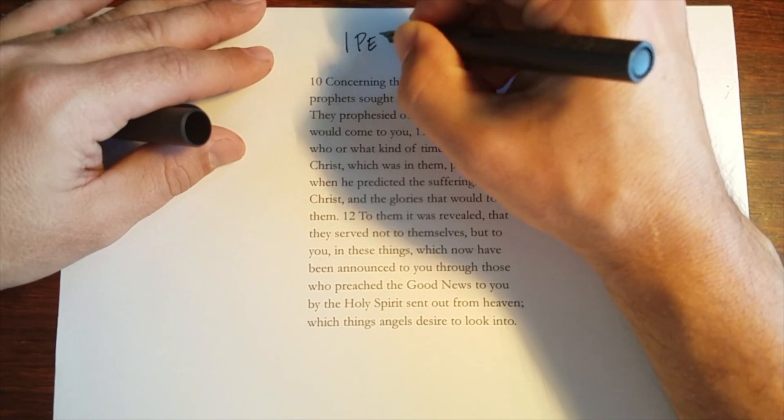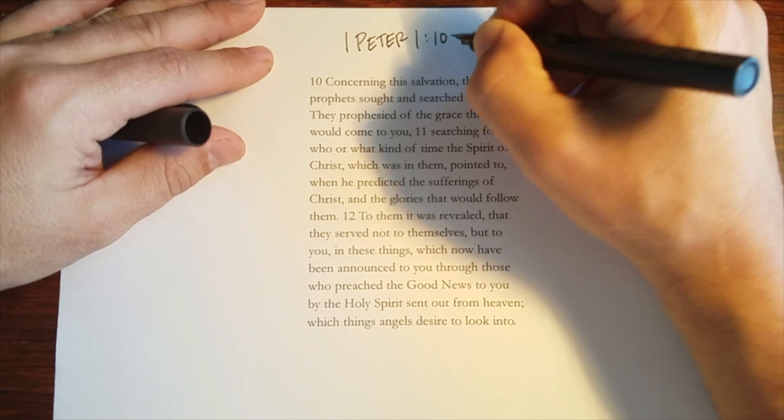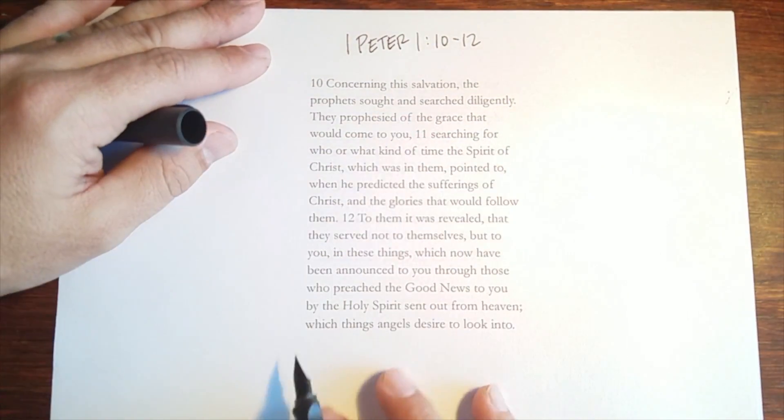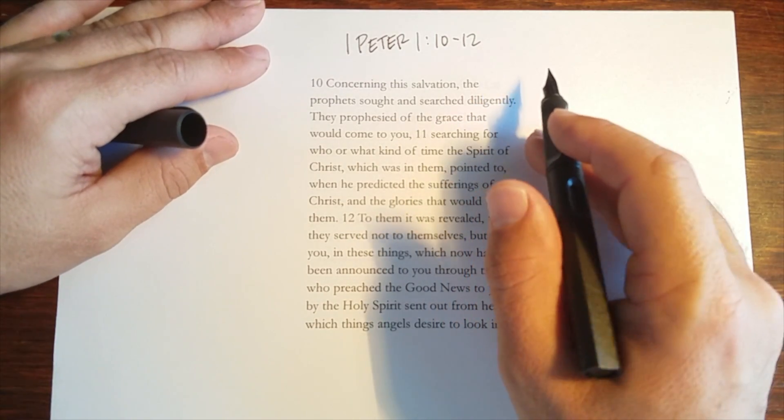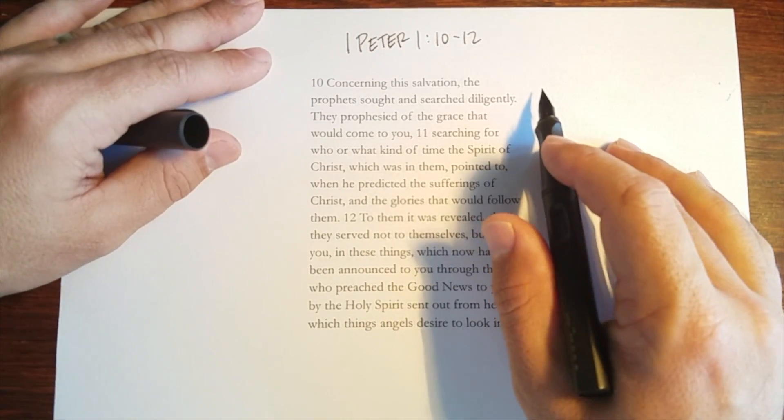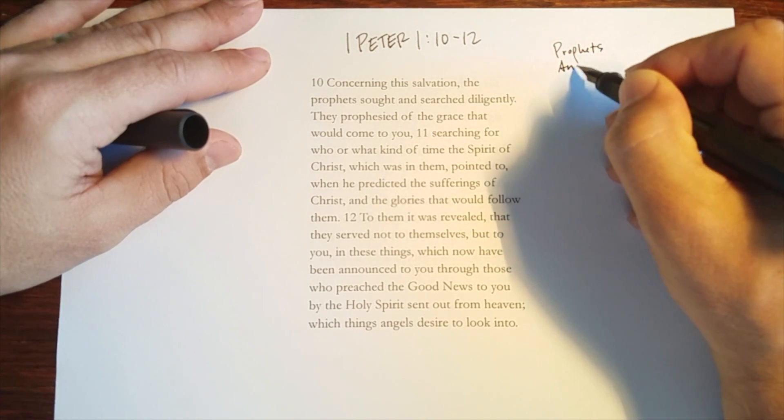Grappling with the text, 1 Peter chapter 1 still, verses 10 all the way through 12. And the basic idea of this text is Peter's going to say, hey, you know this good news that I've been talking about in the first few verses? There's other people who are interested. Namely, the prophets and also the angels.